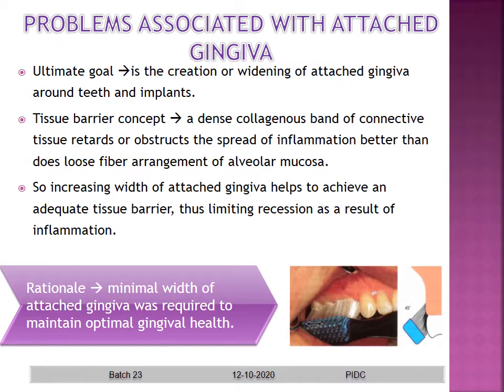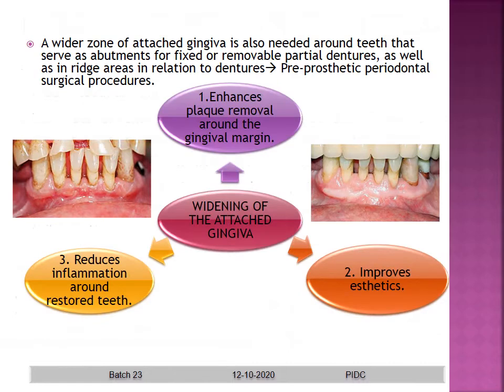The rationale is that there should be at least a minimum width of attached gingiva for optimal health to be maintained. A vital zone of attached gingiva is also needed around teeth that serve as abutments for fixed or removable partial dentures, as well as in ridge areas in relation to dentures. Widening the attached gingiva can enhance plaque removal around the gingival margin, improve aesthetics, and reduce inflammation around restored teeth.